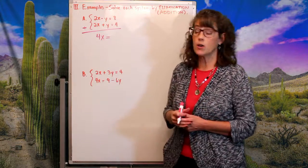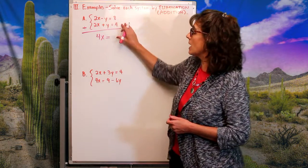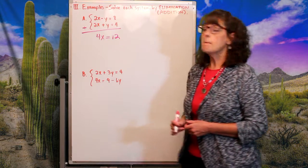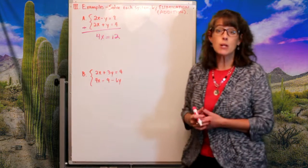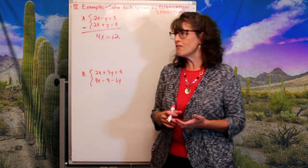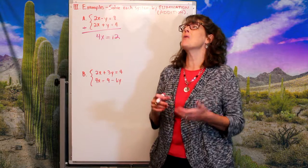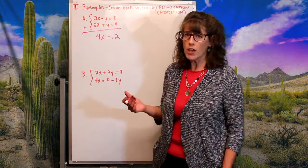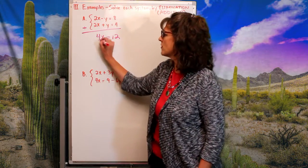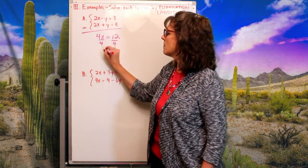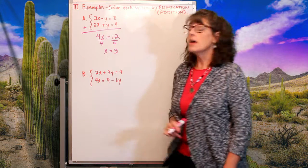I'm down to one variable. 8 plus 4 gives me 12. Since I'm down to one variable I can solve for it — all I have to do is divide by 4, and that tells me x equals 3.